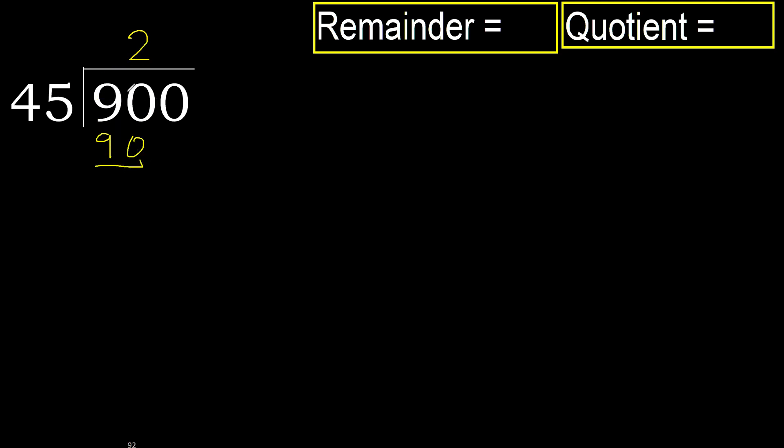OK, subtract. 90 minus 90 equals 0. Next, bring down: eliminate 0.